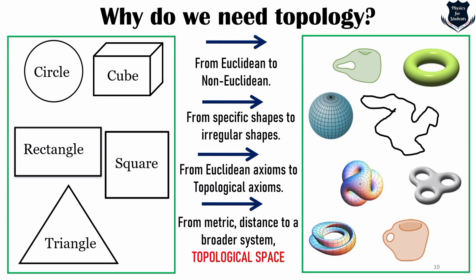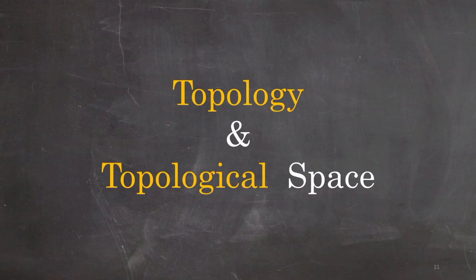From the metric system we are moving into a broader system called a topological space. Topology is also an advancement in terms of human thinking — we are generalizing and trying to get something metric-free, and for that we need a different kind of system and a different kind of space. The Euclidean and Cartesian rules won't be allowed in that space. How do we form that kind of space? That is coming up when we talk about topology and topological space.